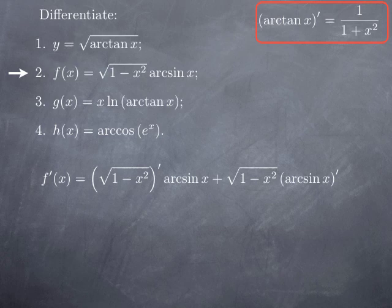For the derivative of the first factor, we have the function 1 minus x squared plugged inside the square root, so we use the chain rule. We get 1 over 2 square root evaluated at 1 minus x squared, multiplied by the derivative of the inside, which is negative 2x. So we obtain negative 2x over 2 square root of 1 minus x squared, multiplied by arcsin x.